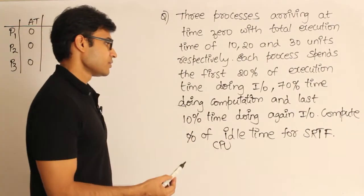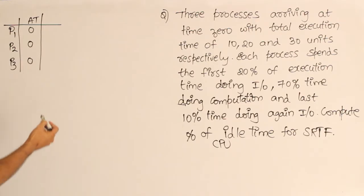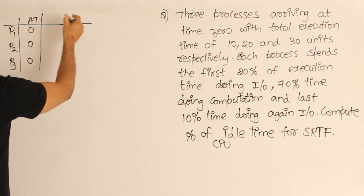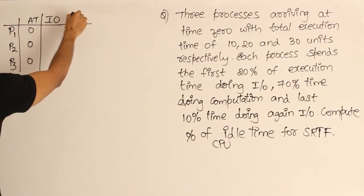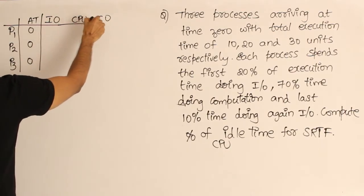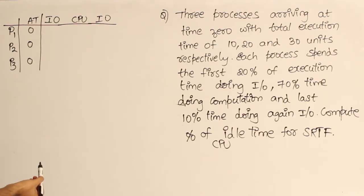For shortest remaining time first, write down the burst time. It is saying they have three types: one is I/O, then CPU, then I/O. This is the total execution time. The first one is saying it requires 10 units of time.